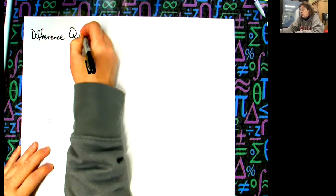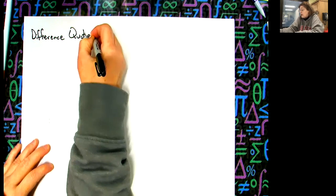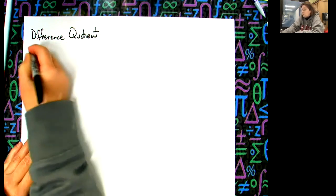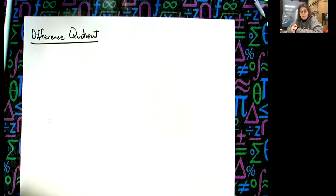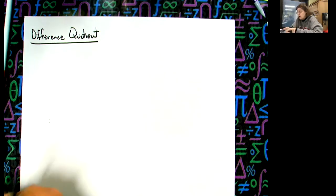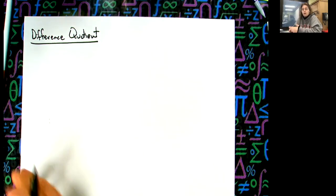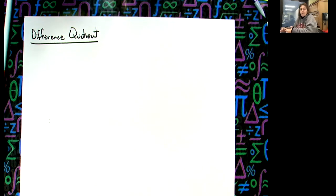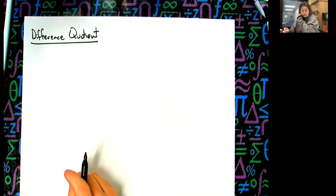This is going to lay the foundation for absolutely everything we do in calculus. You cannot have anything in calculus without having a difference quotient, because we're going to define our limits based on the difference quotient. We're going to define our derivatives on it. We're going to define everything on this difference quotient.